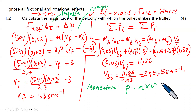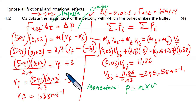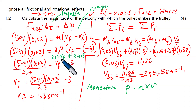A student asks: if I multiply 2.7 by 3, will I be wrong? The teacher confirms it is correct but notes the student is getting a different answer. They work through the steps: 2.7 × V_final plus 2.7 × 3, using the distributive law. The student gets 11.82 for 591 × 0.02.